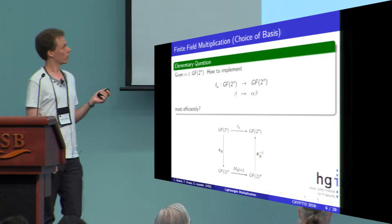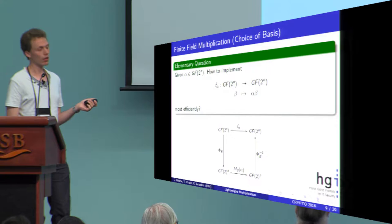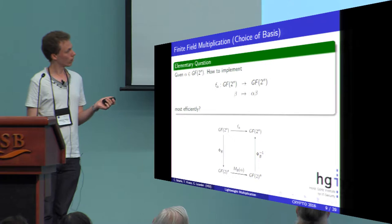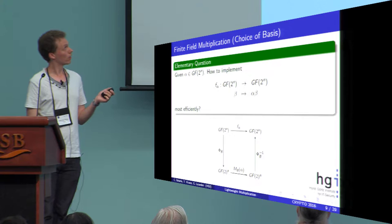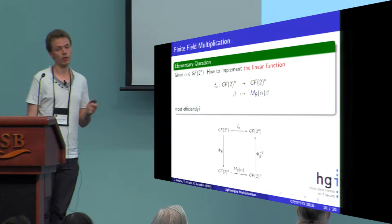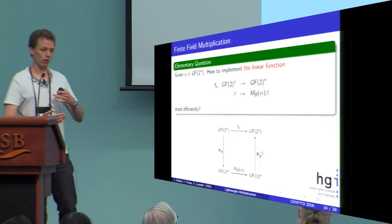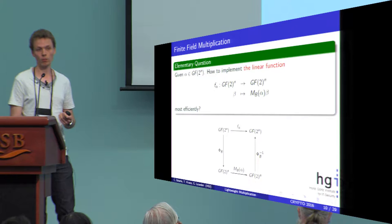There is a natural representation of the finite field as a vector space with n components. If we want to consider this finite field as an n-dimensional vector space, we have to choose a particular basis for this representation. If we have chosen the basis for this vector space, then we can formulate this mapping as a matrix multiplication with a matrix depending on this basis, because the function multiplying with a fixed element alpha is a linear function, and the linear function can be represented with a matrix multiplication.